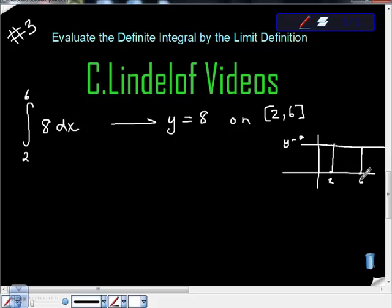The distance between 2 and 6 is 4, right? So this distance here is 4, so we have a base of 4 and we have a height of 8, so it should equal 32. Now, if you're asked to prove this by your professor using the limit definition, then it's a different story.